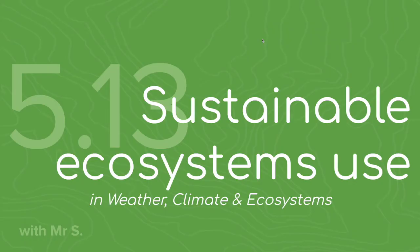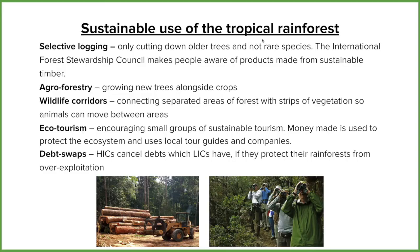So we're looking at how the rainforests are protected. The first method is selective logging — where we only cut down the oldest trees nearing the end of their life, and in particular the species that aren't as rare. In doing so, we protect the wider rainforest and the species that would go extinct if we didn't.